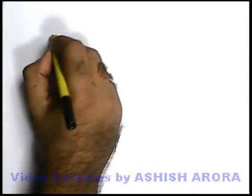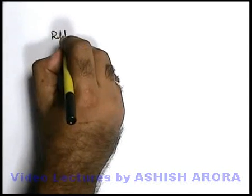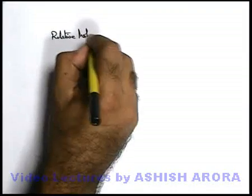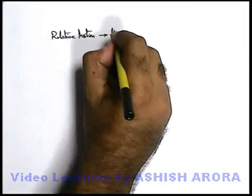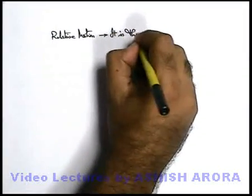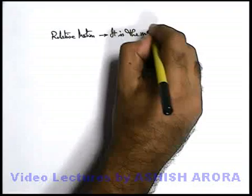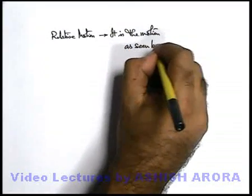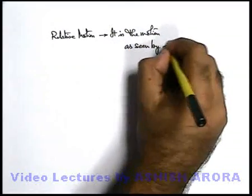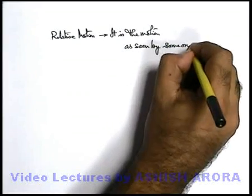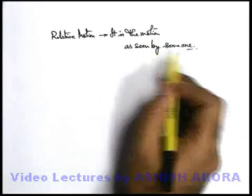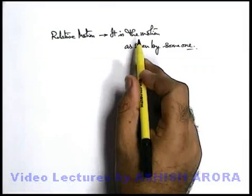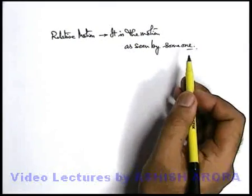We can also state that when we talk about relative motion, it is the motion as seen by someone. How a motion appears to someone is called relative motion of the body with respect to that particular observer.